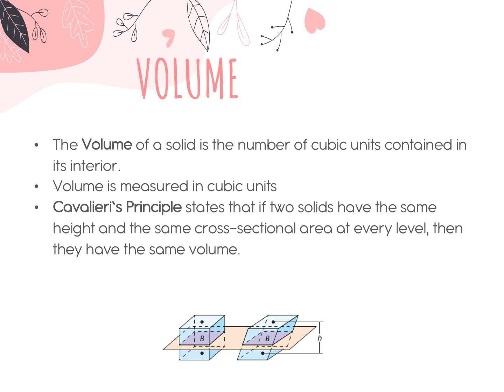Another thing on this slide is called Cavalieri's Principle. I'm not going to test you on what it is, but what it states — if you see this on a standardized test — is that if two solids have the same height and the same cross-sectional area at every level, then they're going to also have the same volume. Both of the figures at the bottom have the same cross-sectional area and the same height, so they would also have the same volume.